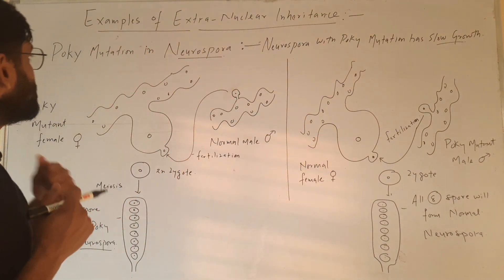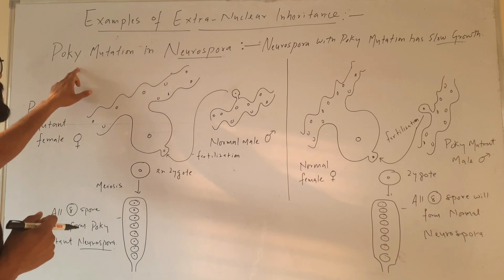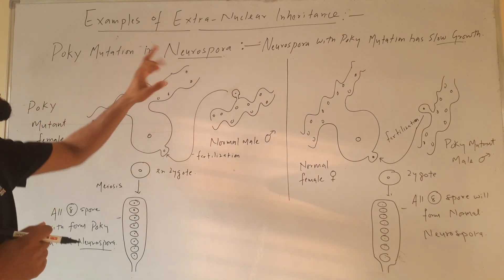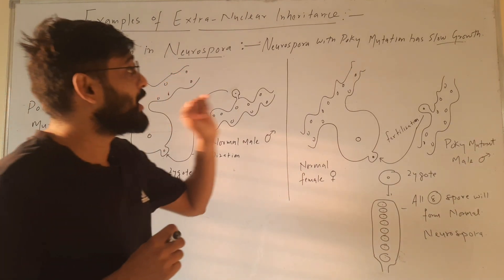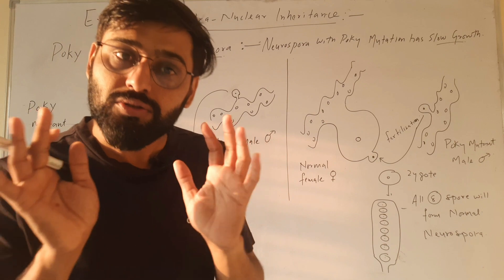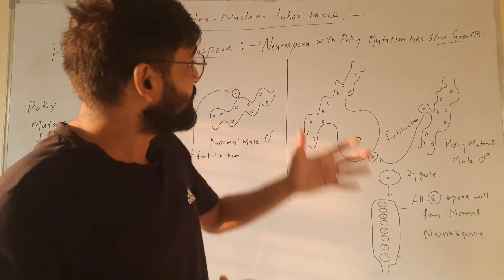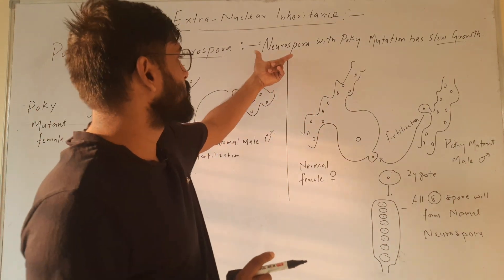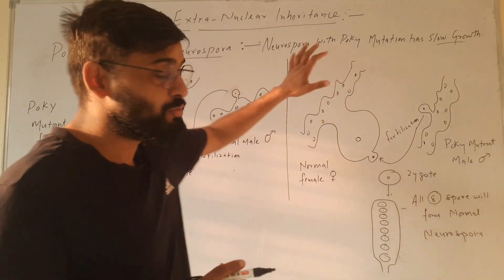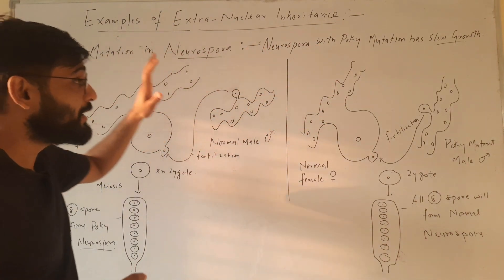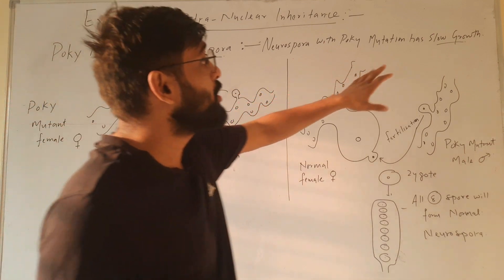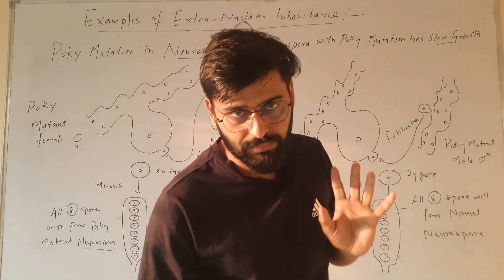That example is poky mutation in Neurospora. A Neurospora with poky mutation has slow growth. If any Neurospora has this mutation, that is poky mutation, it will always show slow growth.